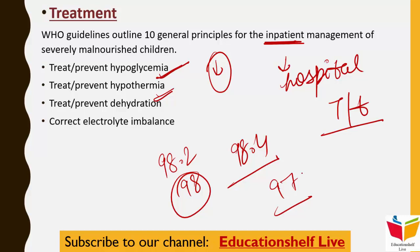The second principle is to treat or prevent hypothermia. Normally our body temperature is 98.4°F; if it falls lower — 98.2, 98, or 97 — that is hypothermia. Fever is when temperature rises, hypothermia is when it falls. The third principle is to treat or prevent dehydration, and to correct electrolyte imbalance — using ORS or IV drips to restore balance.